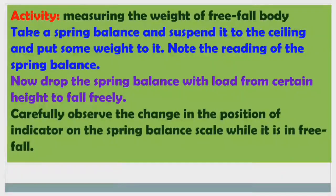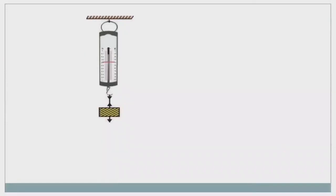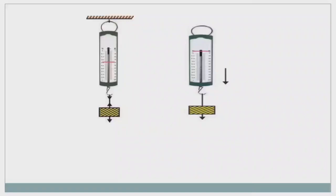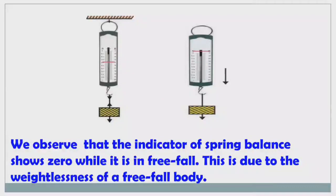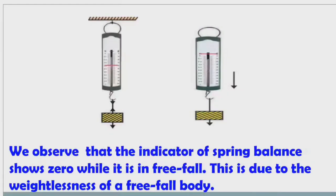Carefully observe the changes in the position of the indicator on the spring balance scale while it is in free fall. Here we can see the spring balance suspended to the ceiling with weights — it shows the weight of the object. When it is falling freely, the indicator of the spring balance shows 0 weight — this is weightlessness. We observe that the indicator shows 0 while it is in free fall.